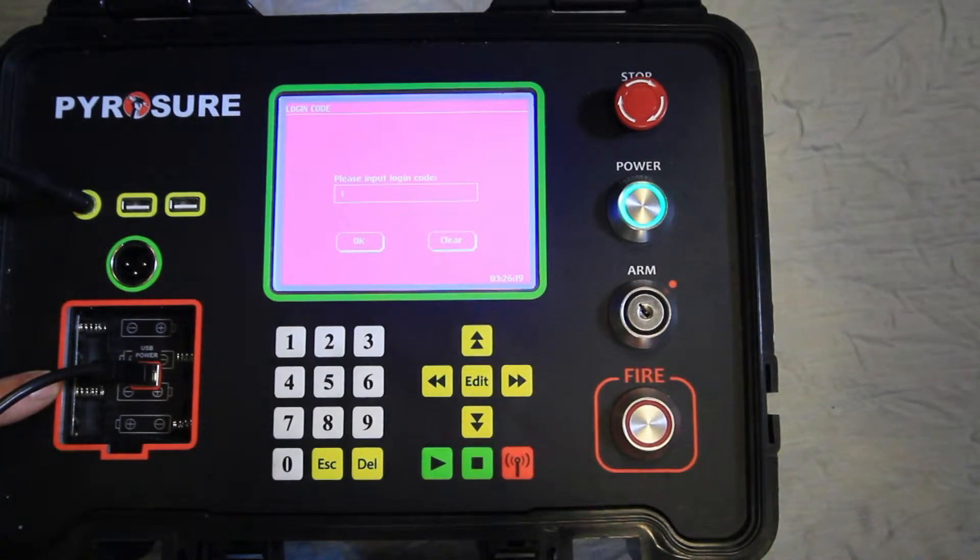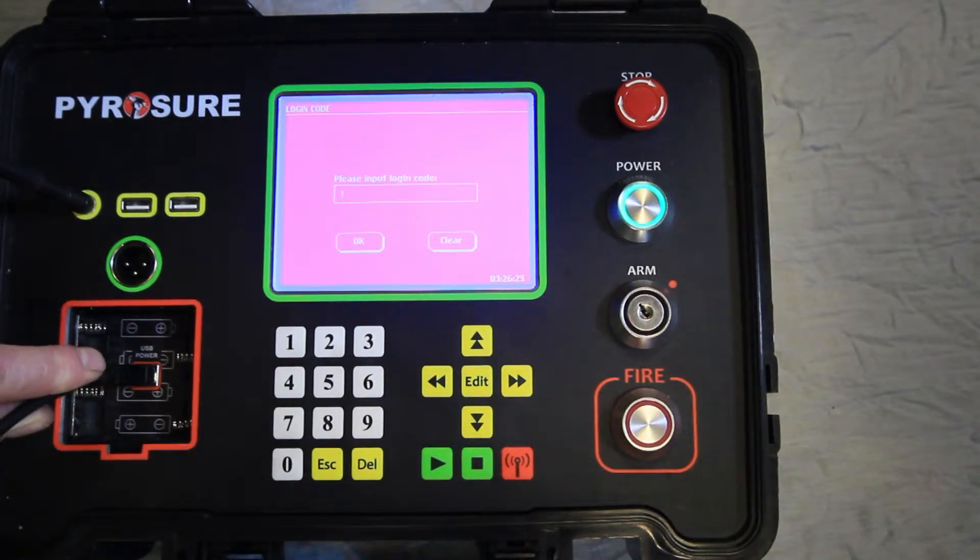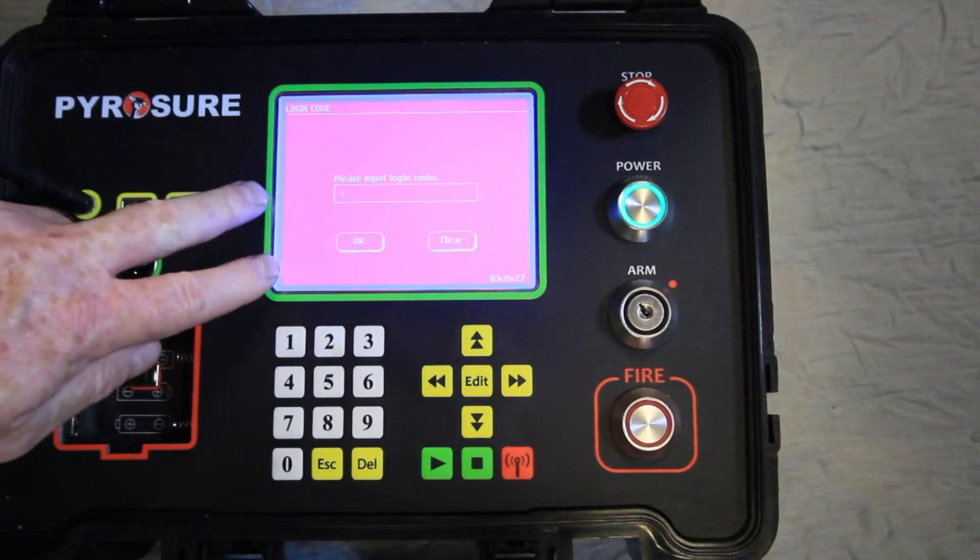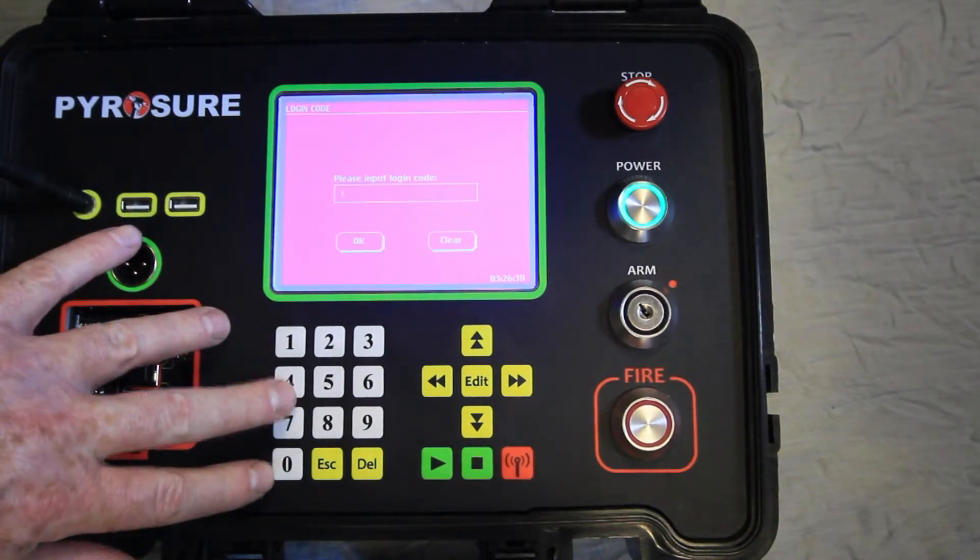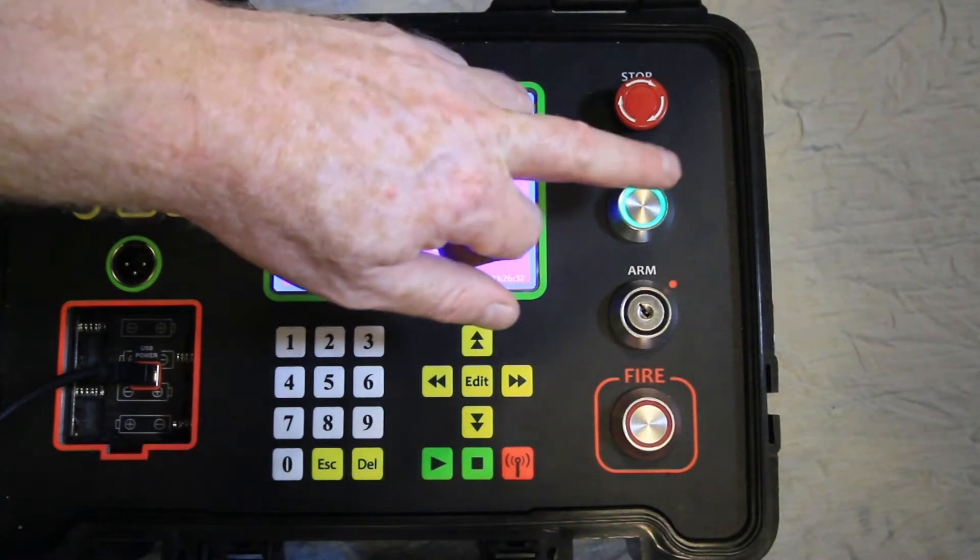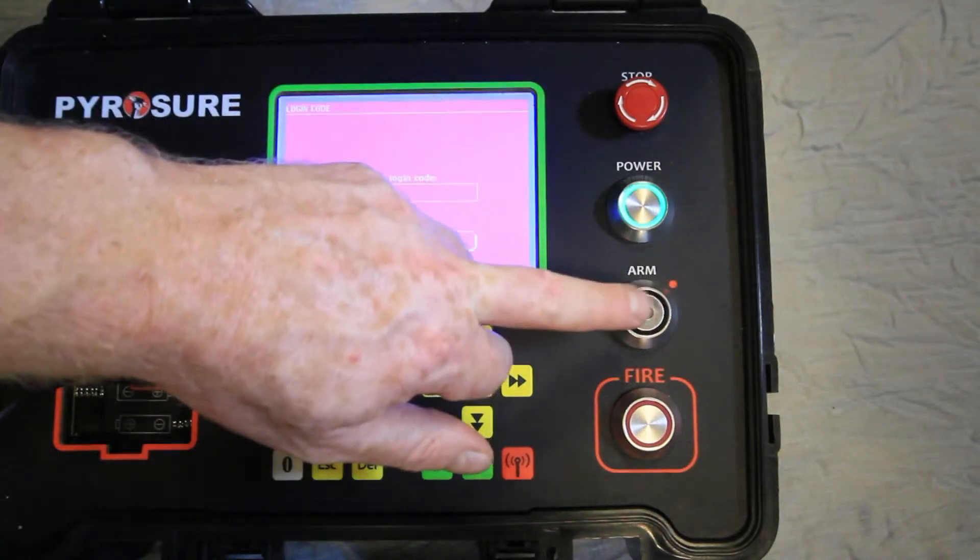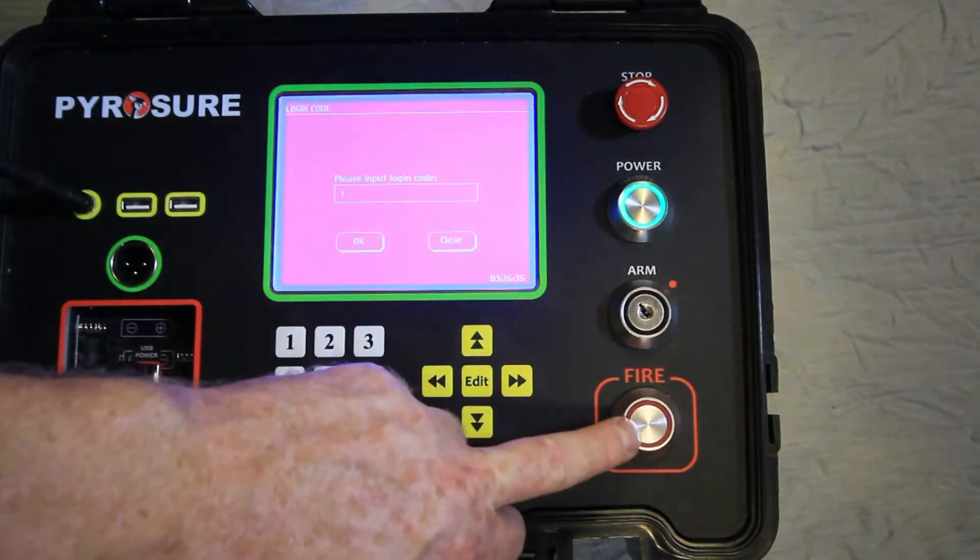The power supply box is suitable for 4 AA batteries or a USB power supply from a 5V supply. The controller features a touch screen, keypad, emergency stop button, power button, arm key, and fire button.